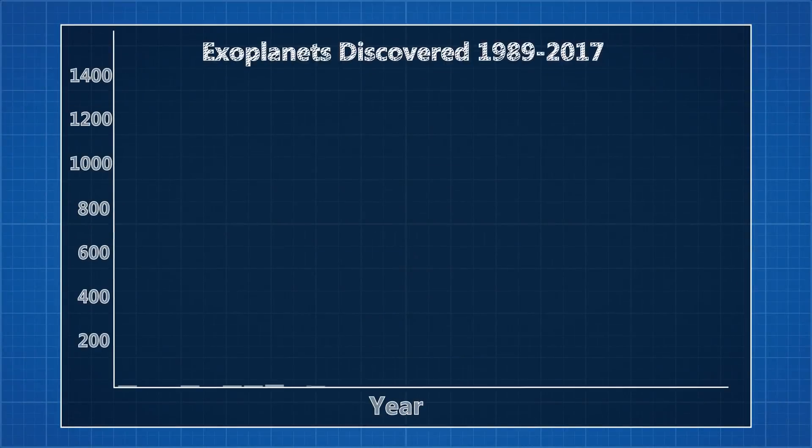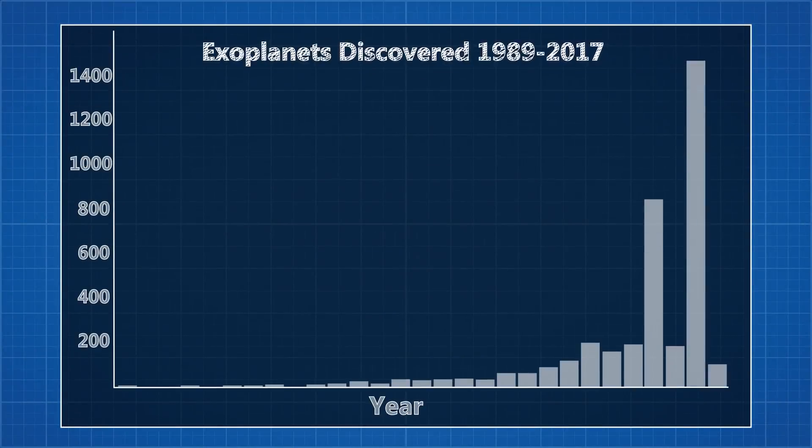It took thousands of years to just discover the planets in our solar system, but in the last 30 years we've discovered over 3,717 planets orbiting stars so far away that we will never be able to visit them with current technology.